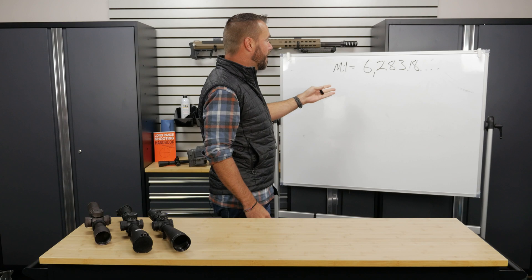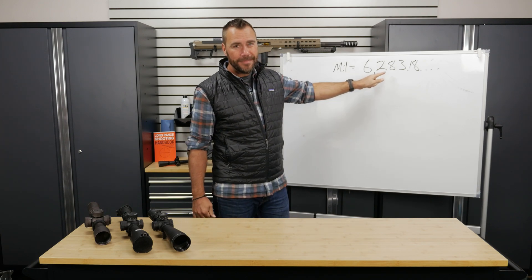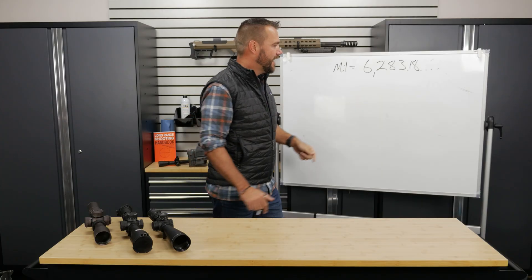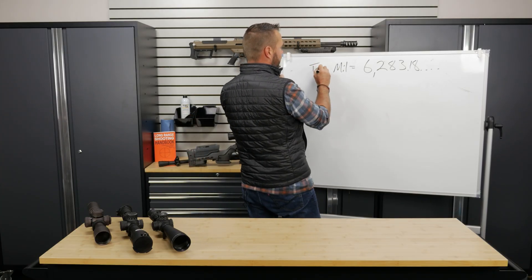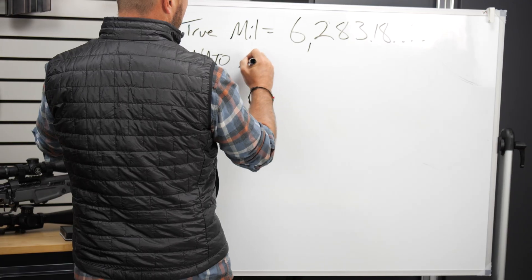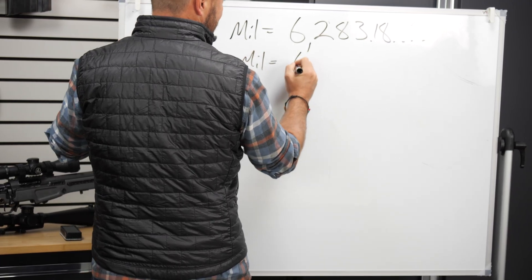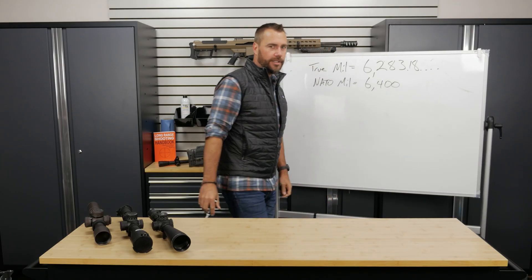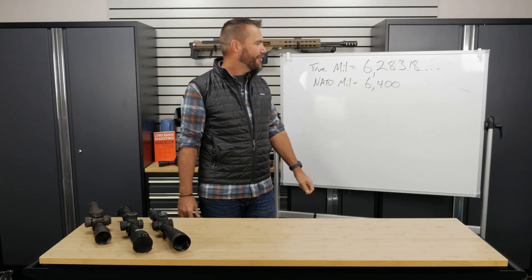The other reason is NATO militaries have decided, since it's not an even number and since they use mills, to go ahead and use a rounded version. A true mill has 6,283.18 mills per circle, but a NATO mill is 6,400 mills per circle. So you can see why the conversion is so difficult.